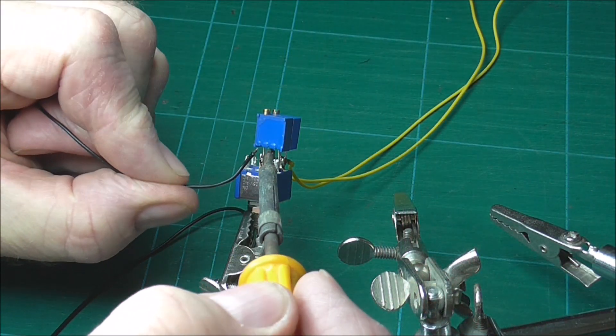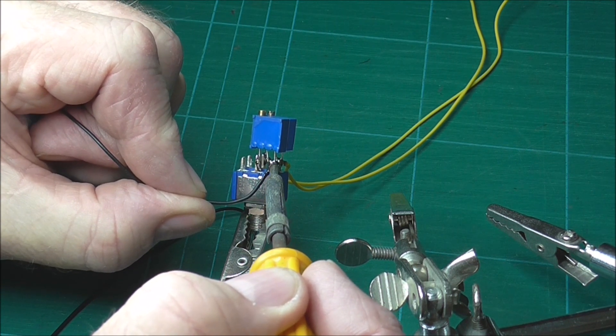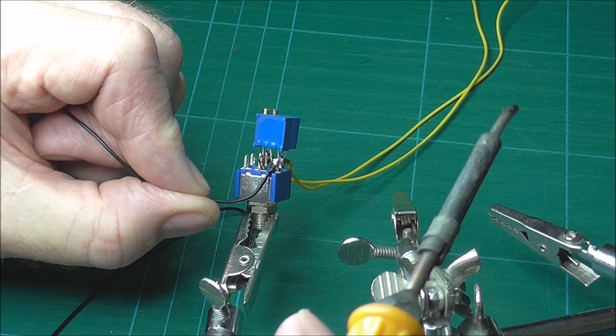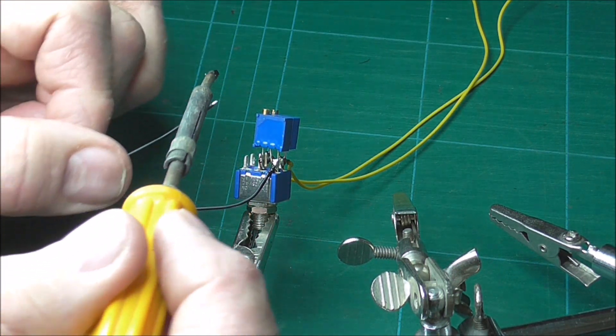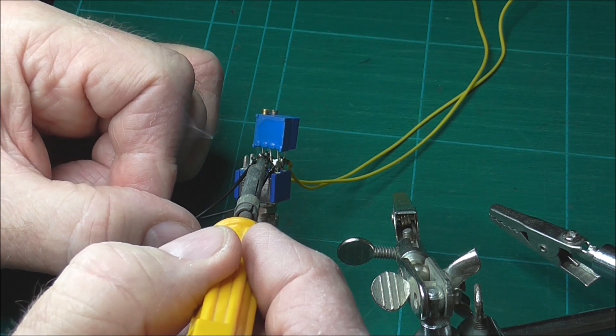Prepare your yellow and black wires. I tinned both of mine before soldering. I soldered one to the right-hand side of the switch and one to the centre of the switch as shown on the screen.